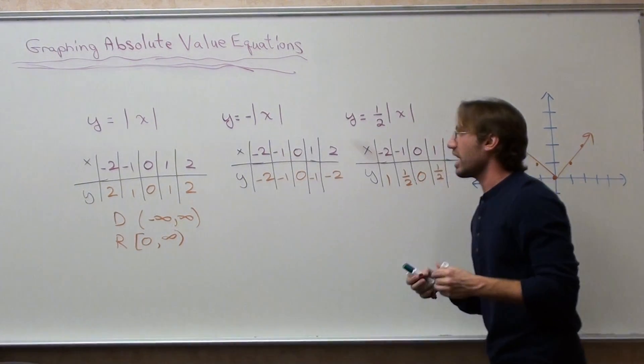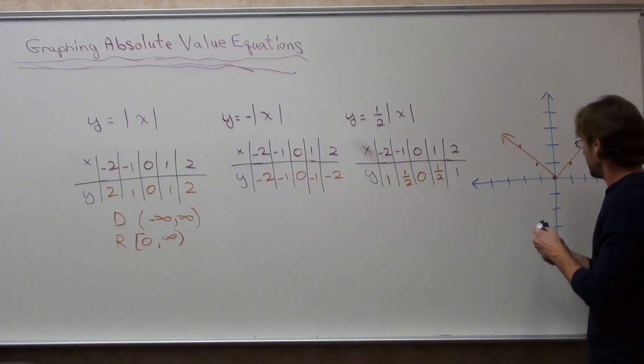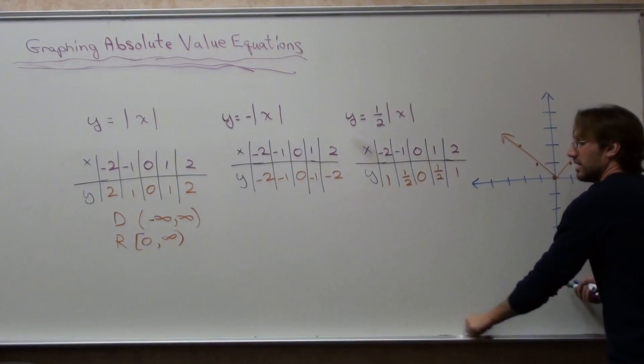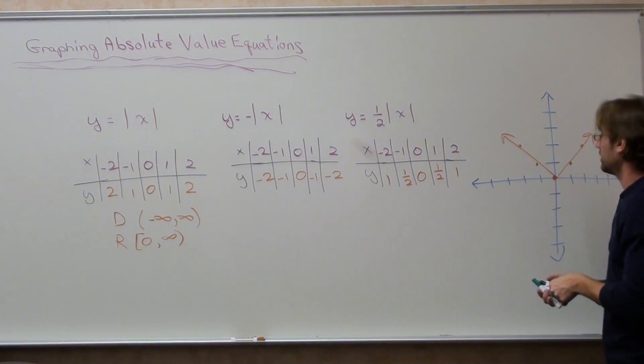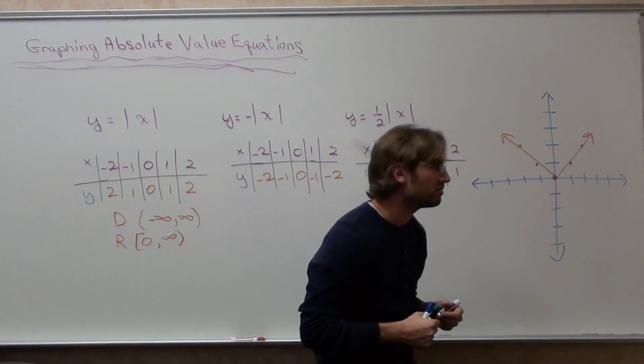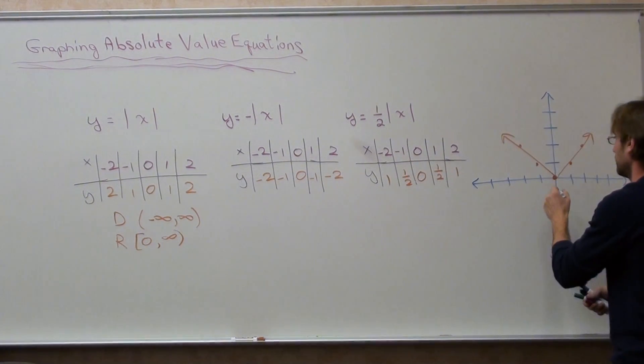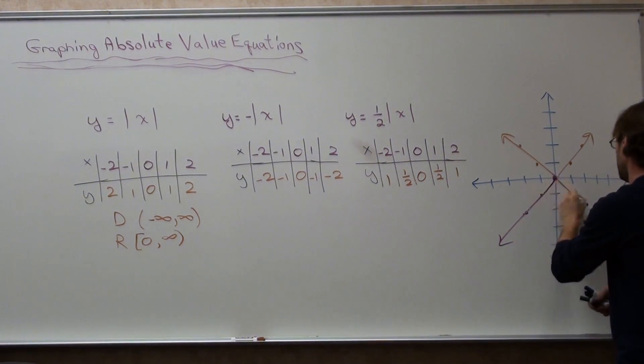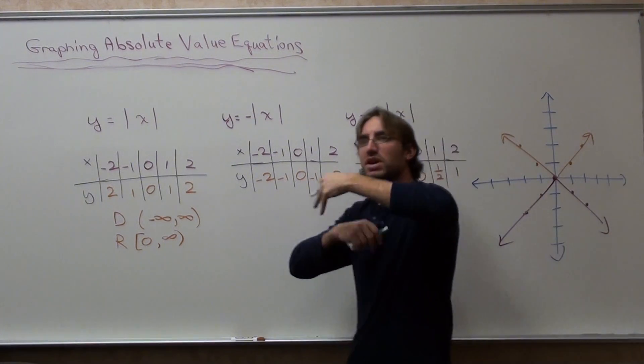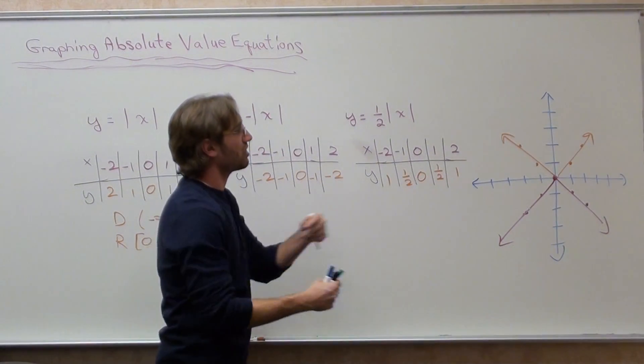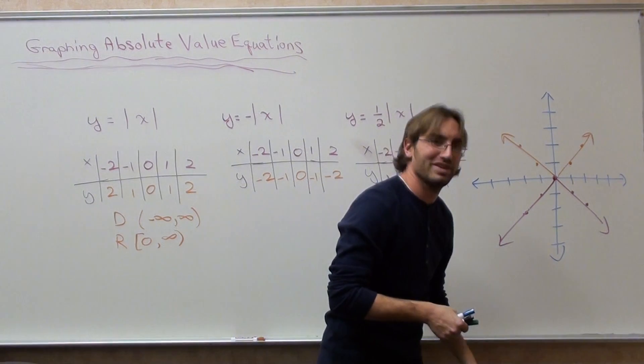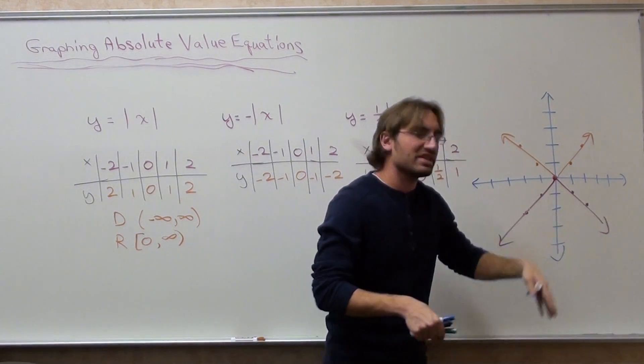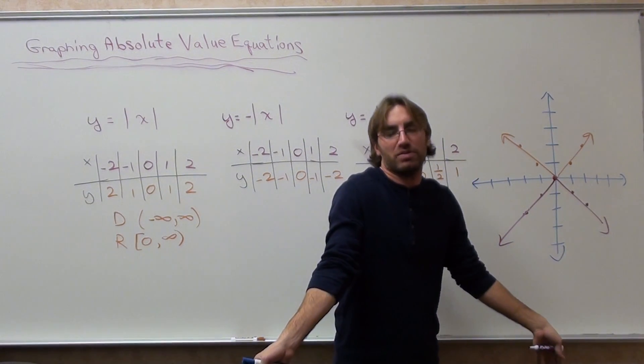For the second graph, though, when I plot the points, and I will plot it in a different color, the graph is a mirror image on the x-axis. It's like somebody took a mirror, and the graph is a downwards v, kind of like a pyramid or a triangle.